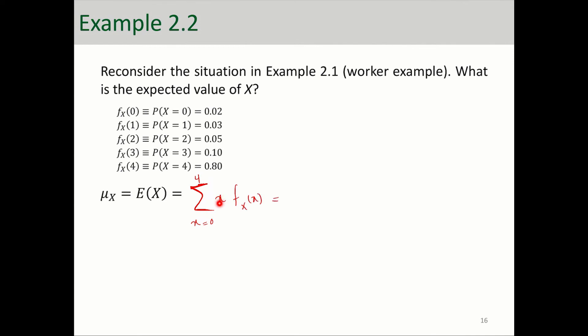The X values change from 0 to 4 and f(x) values, corresponding values, are 0.02 all the way to 0.8. It would be 0 times 0.02 plus 1 times 0.03, and if you notice here we basically multiply the X value to the corresponding probability of that, and we add them up. This comes out as 3.63 number of tasks performed correctly.